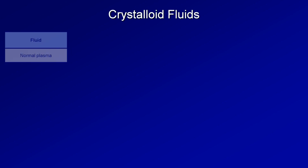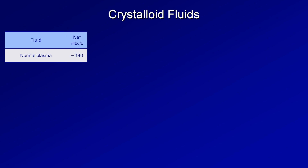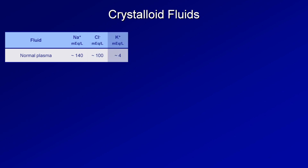To understand the different types of crystalloid, you first need to know what is in normal plasma. Plasma is the extracellular liquid portion of blood in which the red blood cells, white blood cells, and platelets are carried. When it comes to IV fluids, the most relevant constituents of plasma are: sodium, which is normally around 140 mEq per liter; chloride, which is normally around 100 mEq per liter.